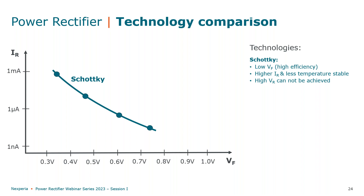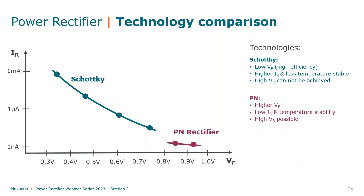Then we have our PN or recovery rectifiers. They usually have a higher VF value, but always extremely low IR values, which make them more stable over temperature.